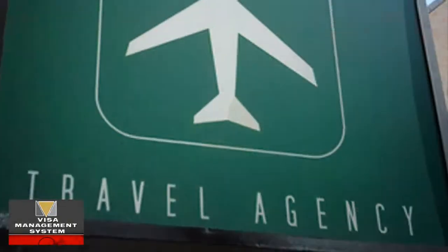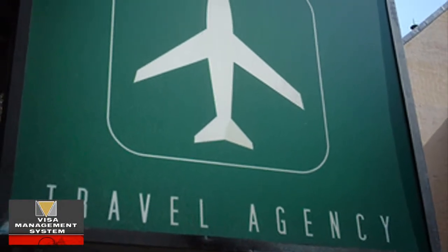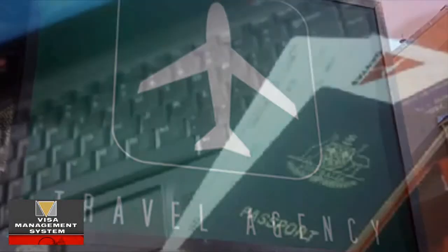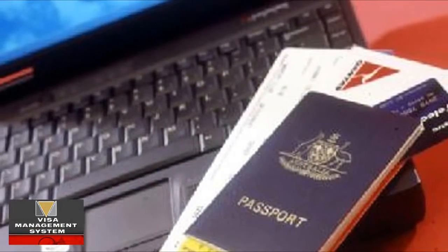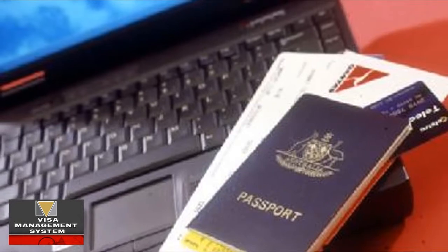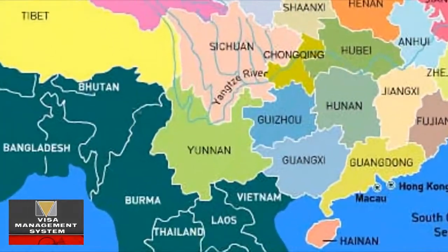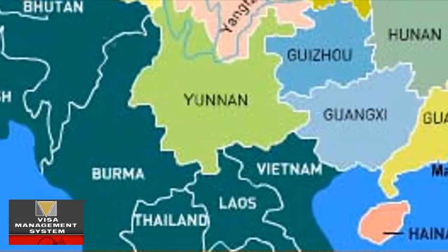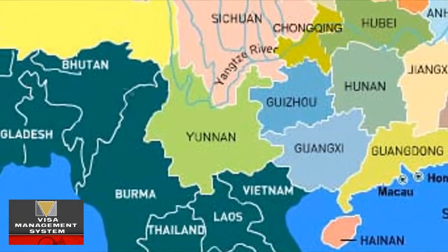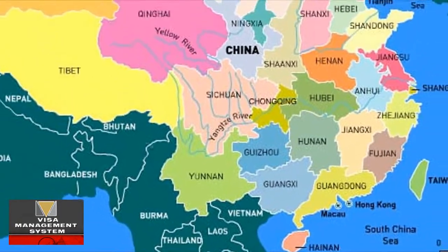The first section is for travel agents. A travel agent can keep a profile of any traveler online. For example, if the same traveler has traveled to a certain country before, say Thailand, and he applied for that visa, all his profile is there.